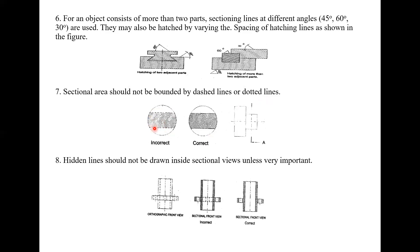The sectional area should not be bounded by dashed lines or dotted lines. If there is a boundary line, it will be continuous — not discontinuous. Hidden lines should not be drawn inside sectional views unless it is very important. In a sectional view, you will typically see hatching lines rather than hidden lines.